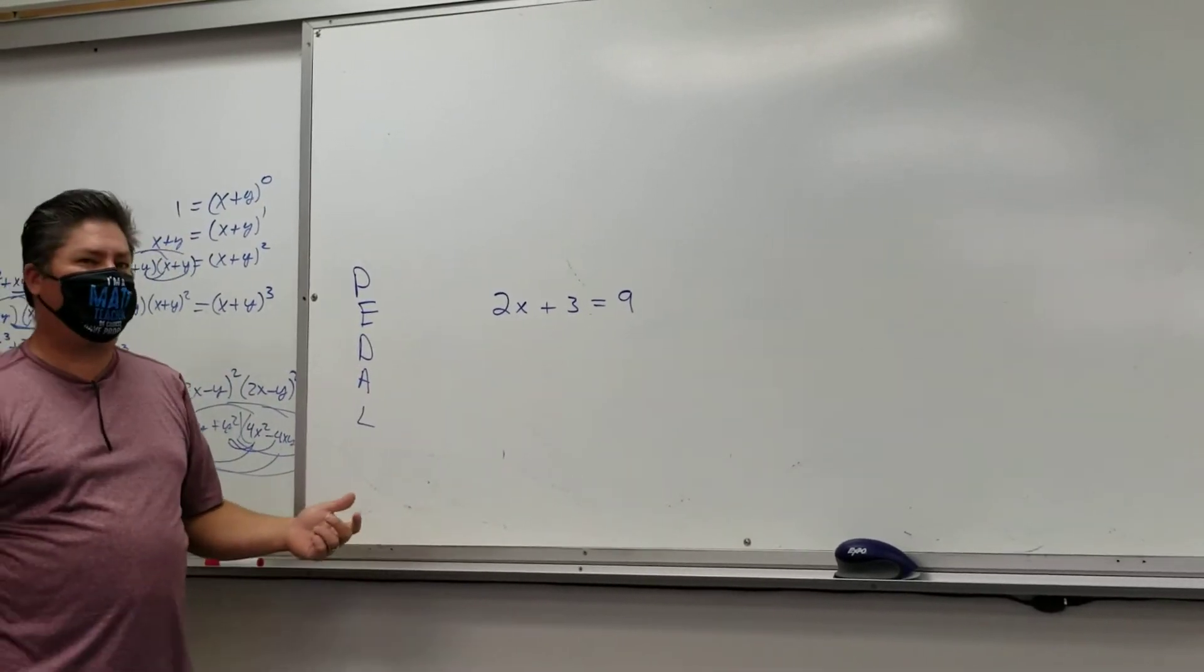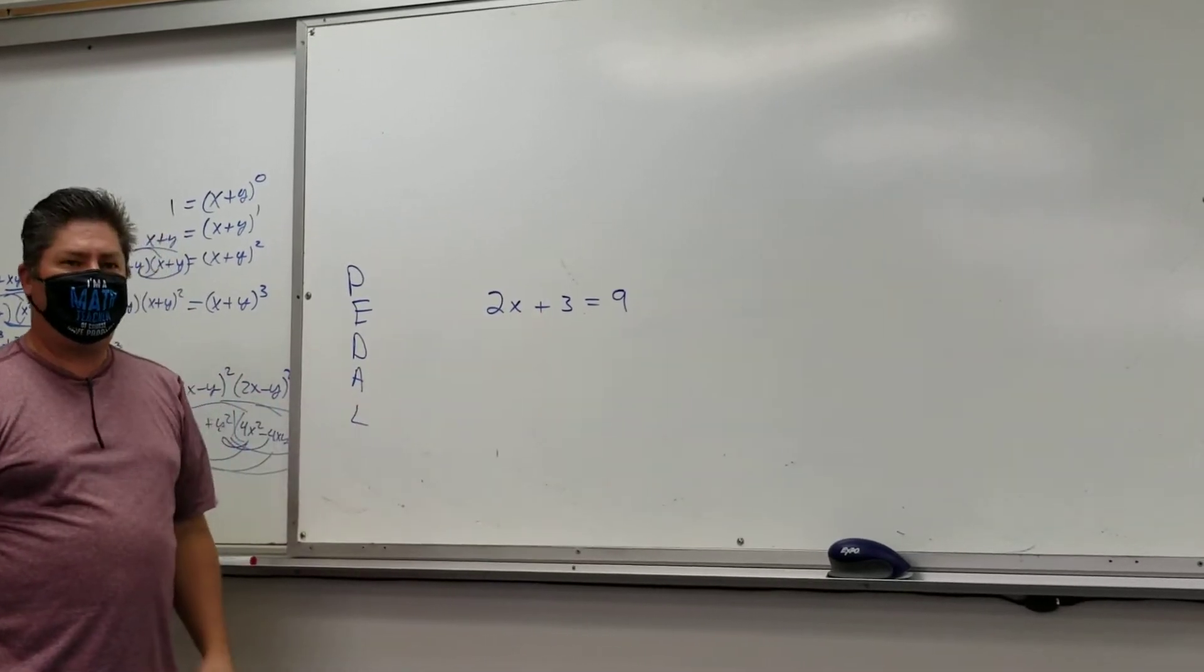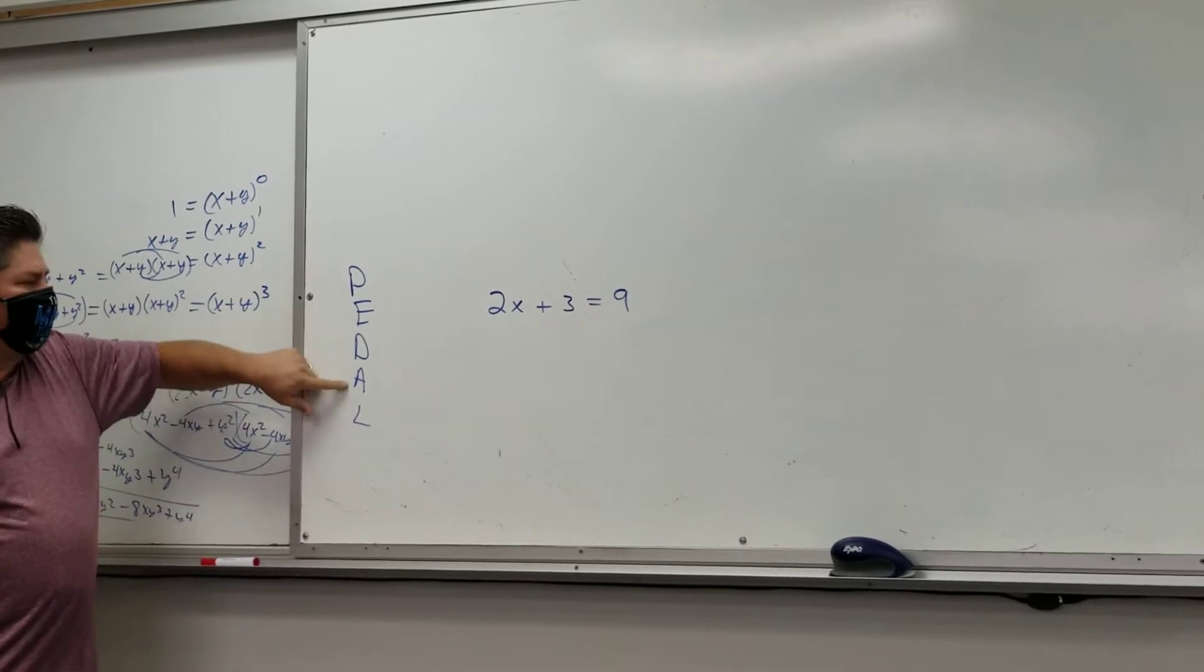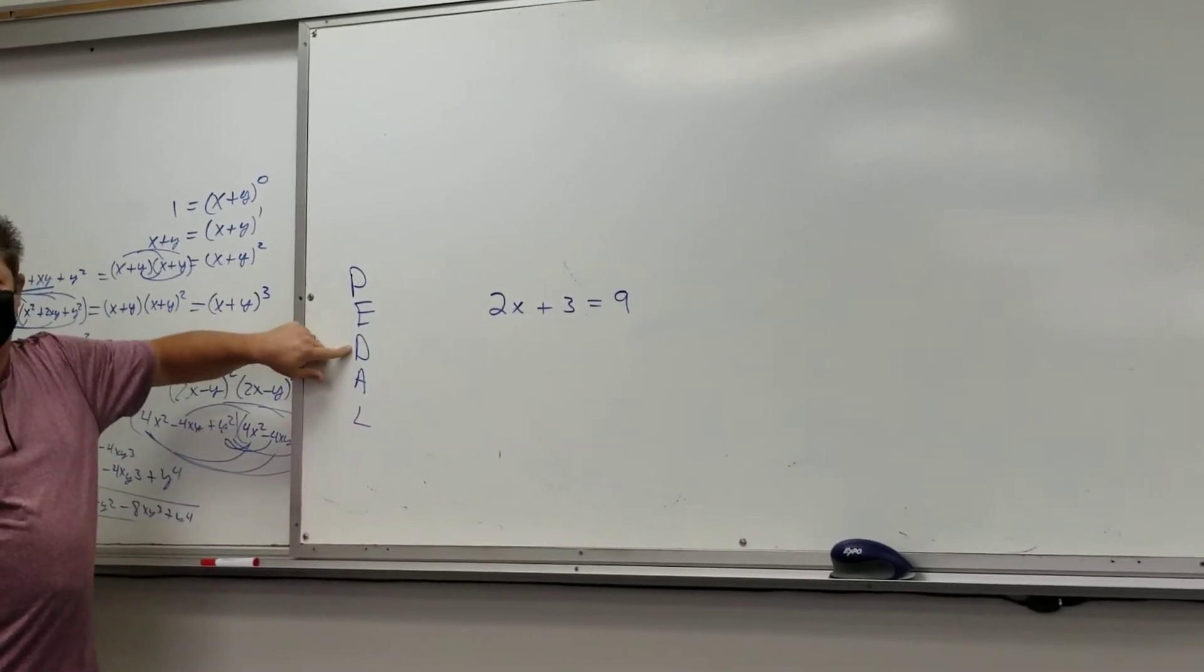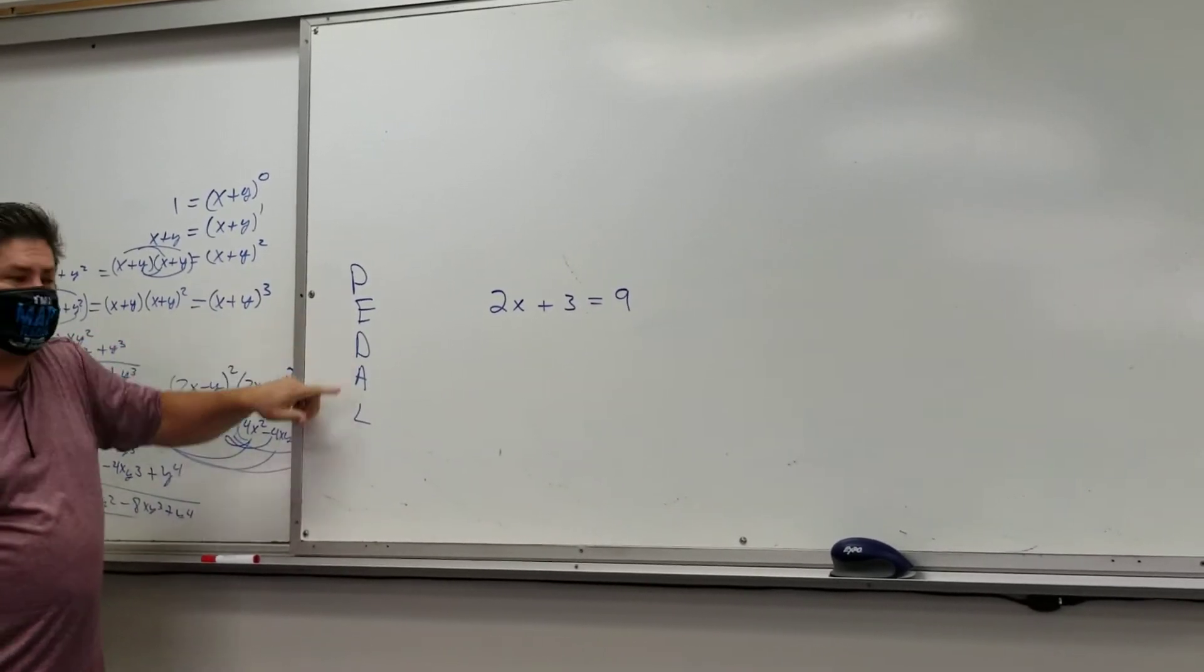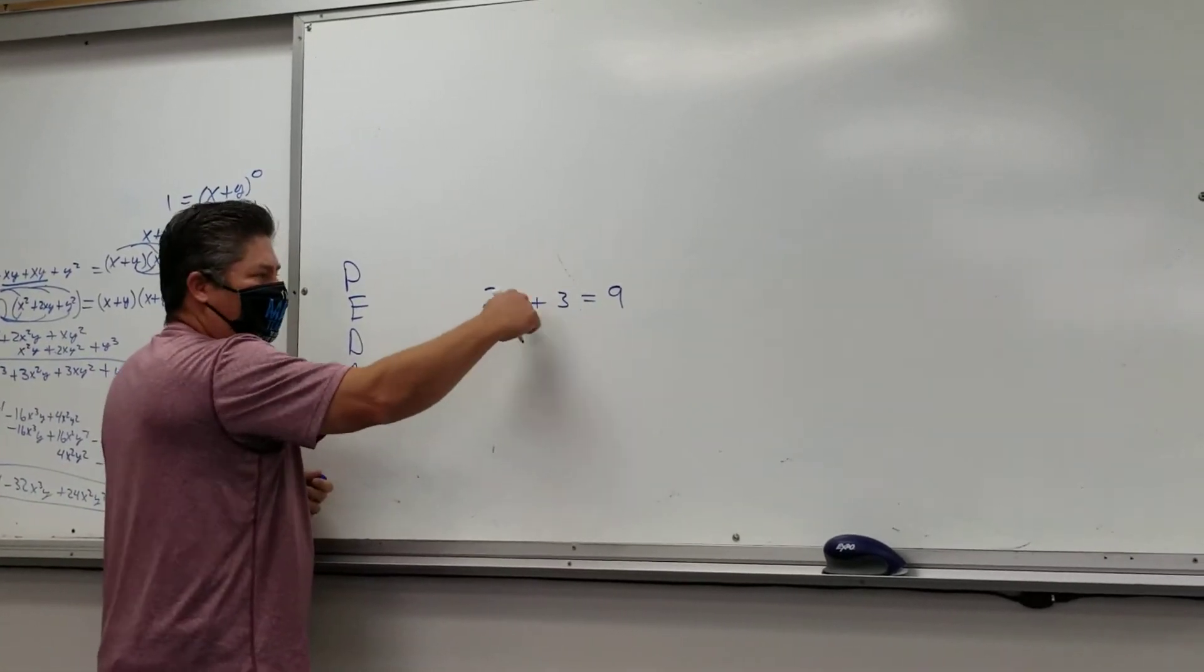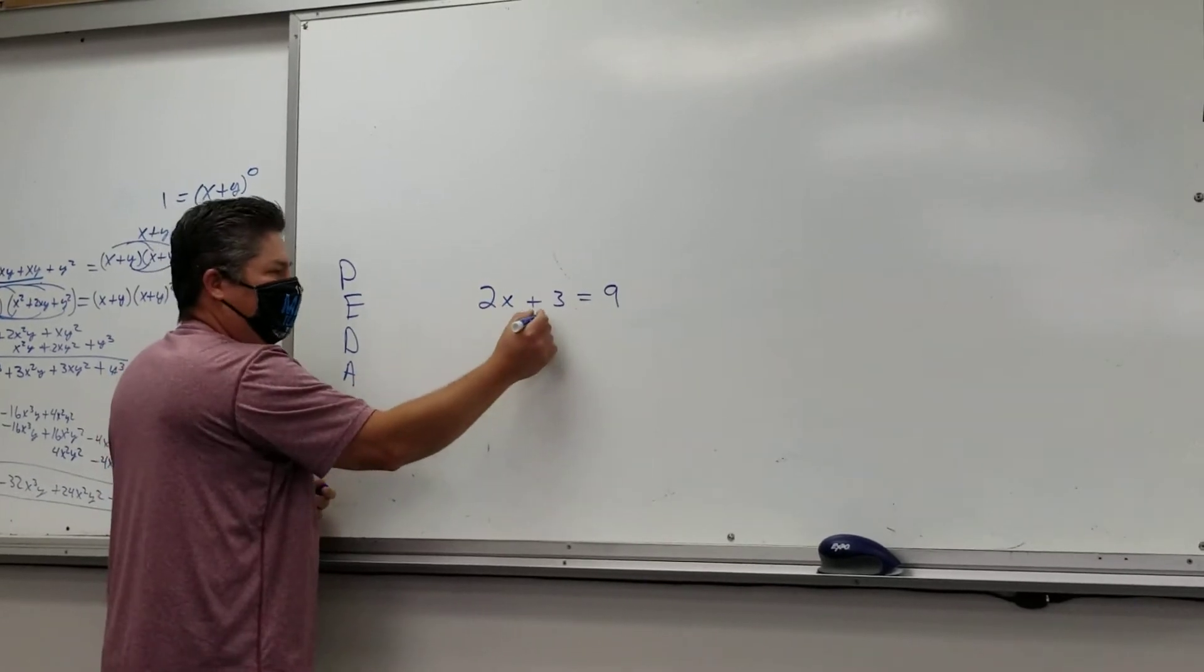Sally, which one should we get rid of first? The three or the two? The three. And the reason is we're going to pedal backwards. We're going to get rid of addition and subtraction before we get rid of division and multiplication. So I'm going to get rid of the addition and subtraction. This is being added to the X, so I'm just going to subtract it.